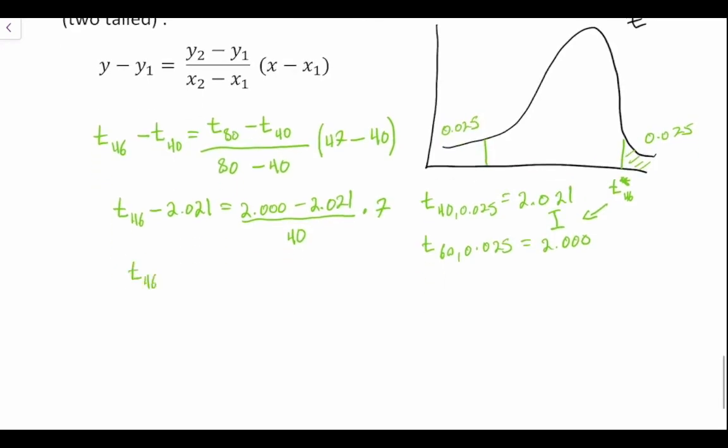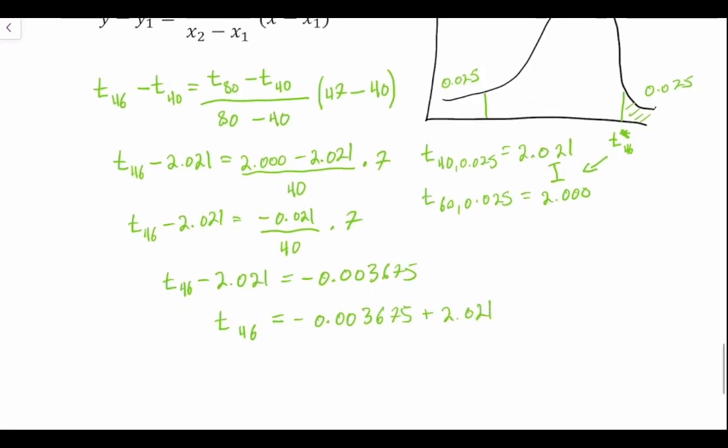So t at 46 degrees of freedom minus 2.021 is equal to 2 minus 2.021, which gives us negative 0.021 divided by 40 times 7. Then t at 46 degrees of freedom minus 2.021 is equal to negative 0.003675. We'll rearrange this equation to get t at 46 degrees of freedom by itself, so negative 0.003675 plus 2.021 gives us t at 46 degrees of freedom.